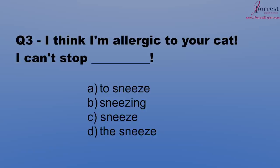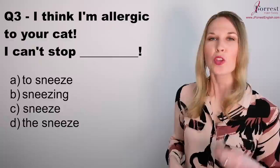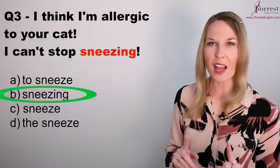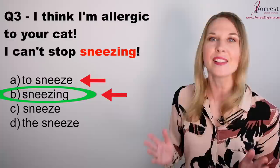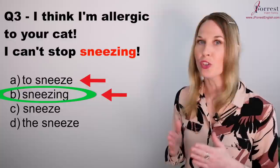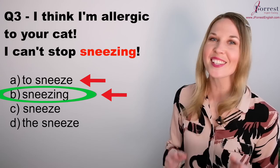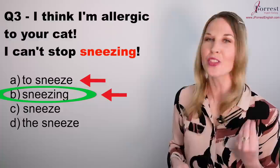Question three: I think I'm allergic to your cat — I can't stop sneezing. The correct answer is B, 'sneezing'. This is a tricky one because grammatically you can have 'stop plus infinitive' (stop to sneeze) and 'stop plus gerund' (stop sneezing), but the meaning is different. When we're talking about no longer doing an action, we use stop plus gerund. Based on the context, we need the gerund.